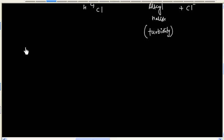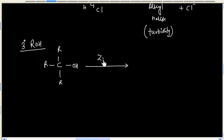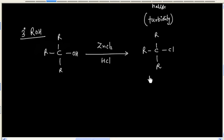If I have a tertiary alcohol, it will react with Lucas Reagent. It forms alkyl halide, so solution will become turbid immediately.